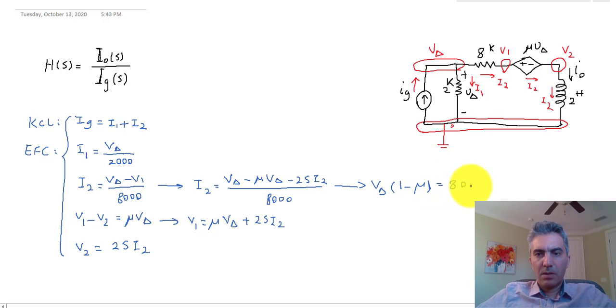I'm going to continue the math up here. So then V_delta is equal to (8000 plus 2s) divided by (1 minus mu) times I2. Now I can take that, put it in this equation, and finally I can write I_G as a function of I2, which is what I was trying to accomplish. So this would be (8000 plus 2s) over (2000 times (1 minus mu)) times I2 plus I2.